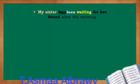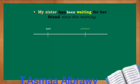Example: My sister has been waiting for her friend since this morning. My sister is the subject, plus has, plus been, plus waiting, which is the verb in present progressive. Since present progressive is an action which started in the past and continues till now, this sentence means that my sister has started to wait for her friend since this morning. The action is still happening now.